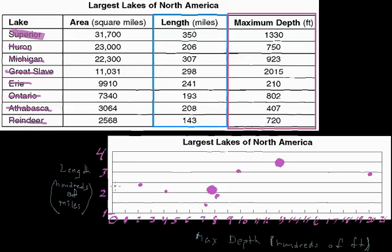So here are all the lakes scattered along the scatter plot. If you really think about it, plotting the points on a scatter plot is similar to plotting points on a coordinate plane with x and y axes, or x and y values. Cool stuff.